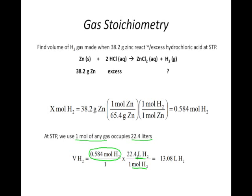How many liters are there in every mole at STP? 22.4. Multiply the top across and divide by the bottom, and you get 13.08 liters of hydrogen gas.